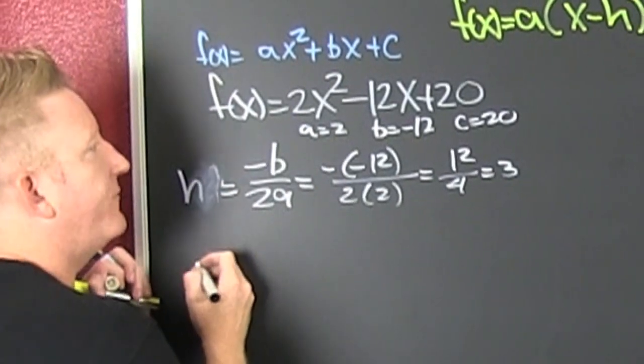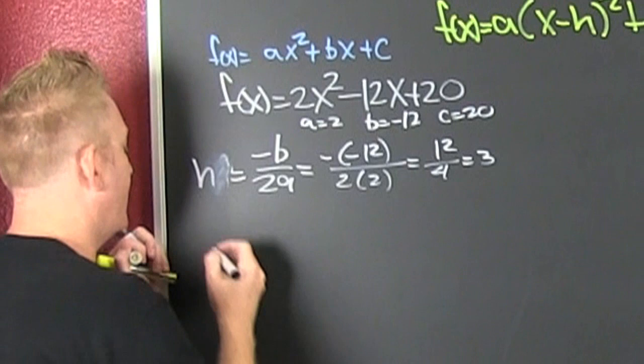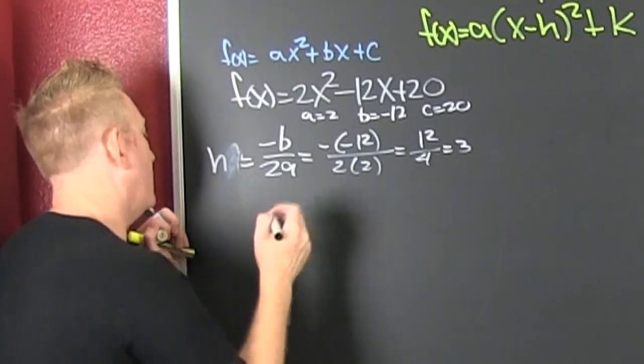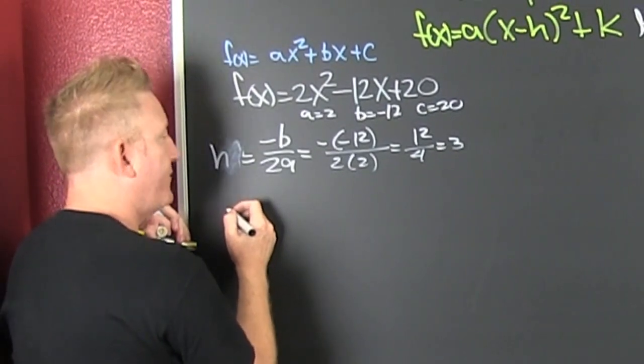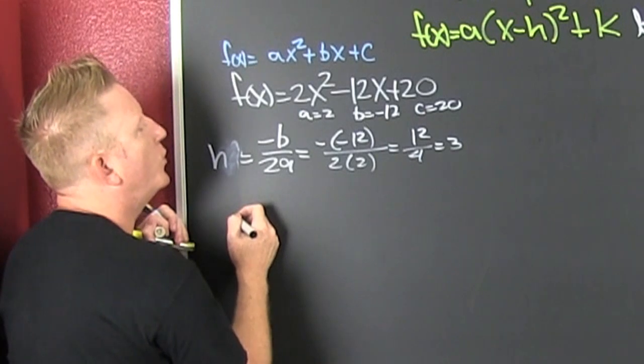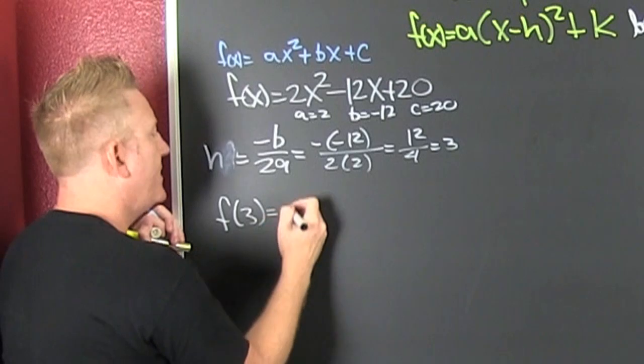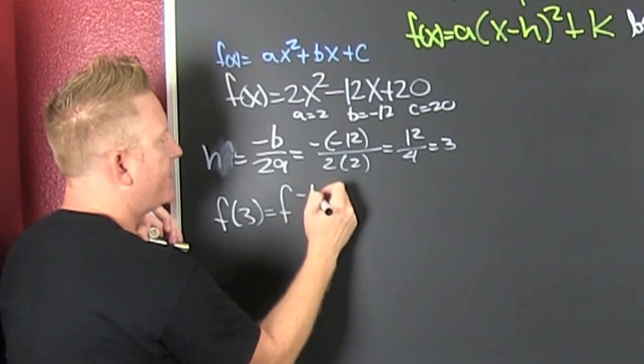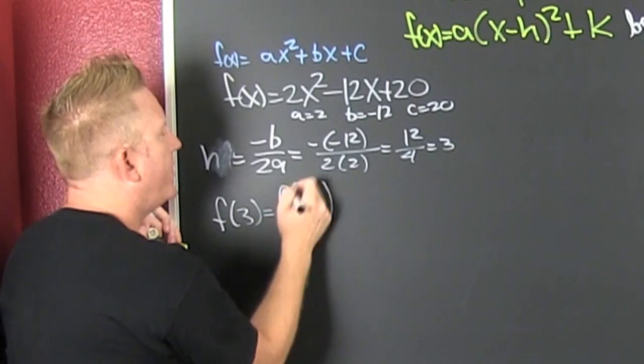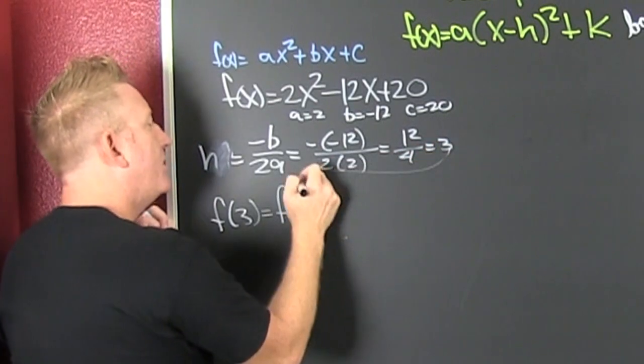Now what am I doing? I'm looking for the y-coordinate of my vertex. So then my y-coordinate of my vertex is f of 3 because that's f of minus b over 2a, which is what we already said goes right there.